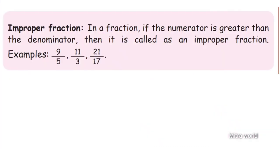Next is the improper fraction — the opposite of proper fraction. In an improper fraction, the numerator is greater than the denominator. Then it is called an improper fraction. Examples: 9 by 5, 11 by 3, 21 by 17.